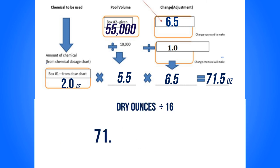Ounces divided by 16. Take 71.5 divided by 16 and you should get 4.5 pounds.